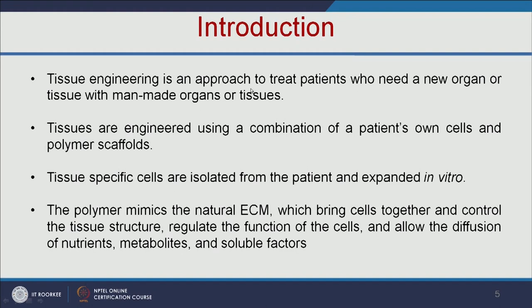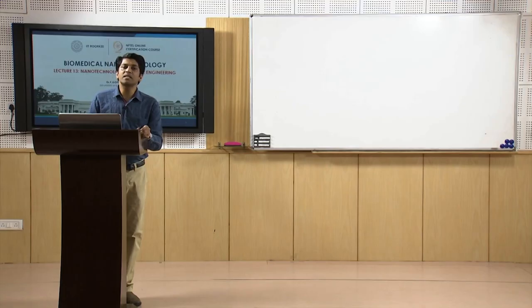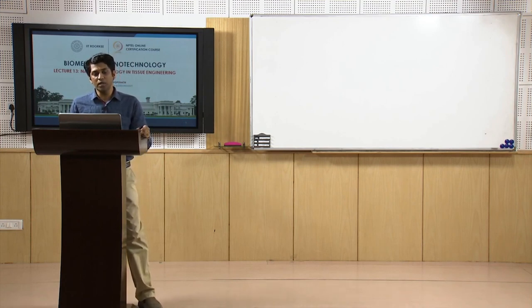Tissue engineering is an approach to treat patients who need a new organ or tissue with a manmade organ or tissues. The tissues are engineered using a combination of the patient's own cells and a polymer scaffold. We are going to take the patient's own cells, add them on the polymeric scaffold, grow the tissue in the lab condition, and then implant it into the patient.